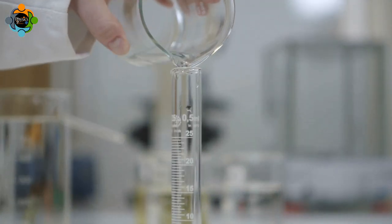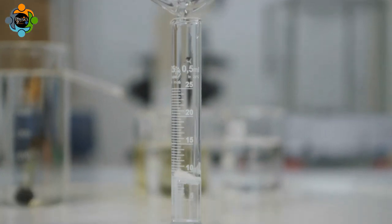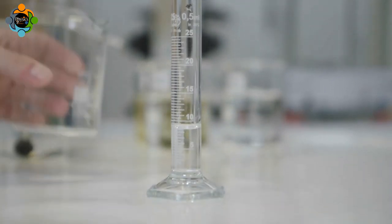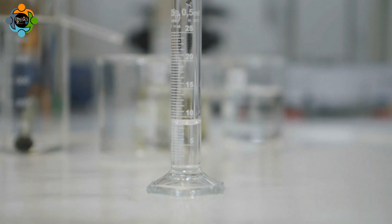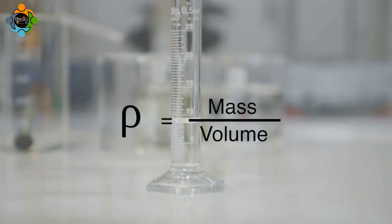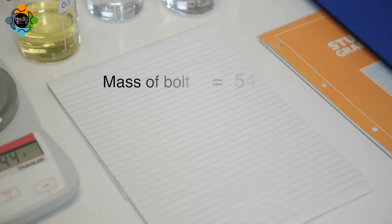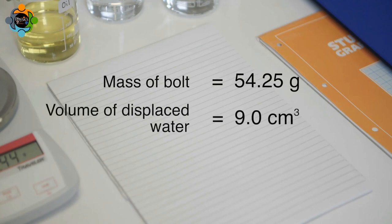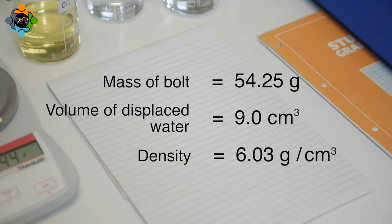The displaced water is poured into a measuring cylinder and the volume is recorded. Density is calculated using this equation: density equals mass divided by volume. Density is represented by the Greek letter rho (ρ). The mass of the bolt was 54.25 grams and its volume was 9 centimeters cubed, giving a density of 6 grams per centimeter cubed.